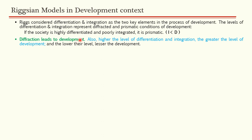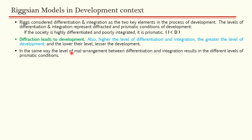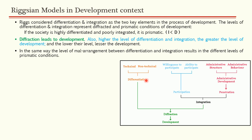Diffraction leads to development — a diffracted society is a developed society. Higher the level of differentiation and integration, greater the level of development; lower the level, lesser the development. The level of mismatch between differentiation and integration results in different levels of prismatic conditions. Riggs has given a chart to explain how diffraction leads to development.